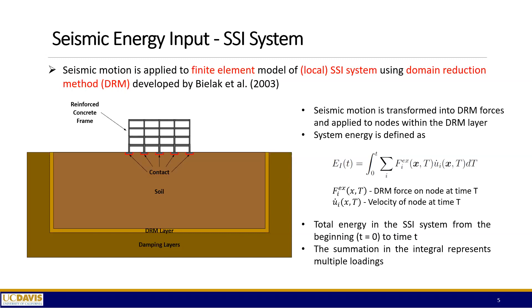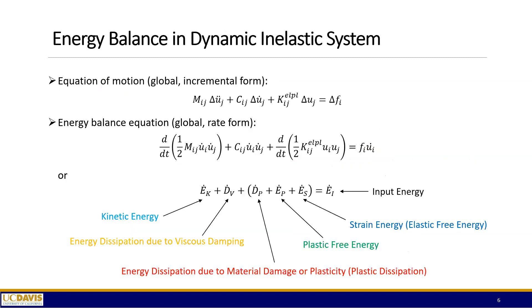The important thing is that this is the energy that goes in and comes out of the system — the energy that passes through, part of which is going to be dissipated. Next, we move on to the overall energy balance in a dynamic elastic system. We start from the equation of motion in global incremental form, where the left-hand side has the acceleration-proportional term, the velocity-proportional term, and the displacement-proportional term, and the right-hand side has the forcing terms. Multiplying both sides by the velocity vector and rearranging, we arrive at the energy balance equation in global rate form.